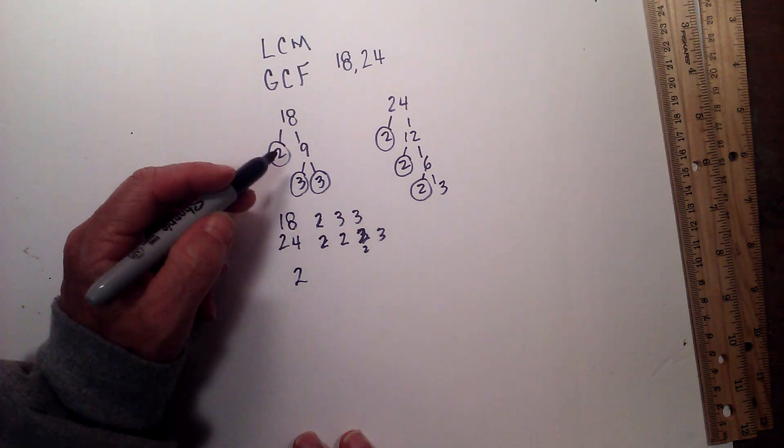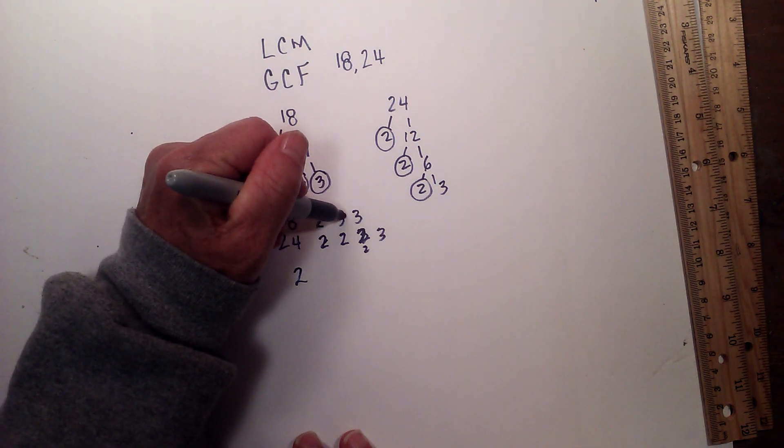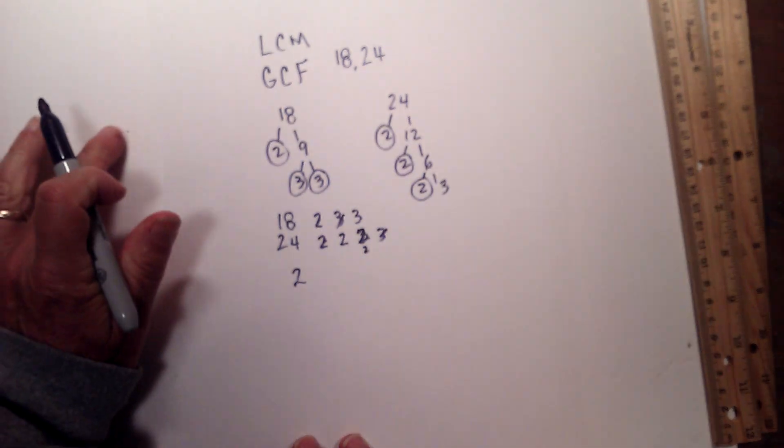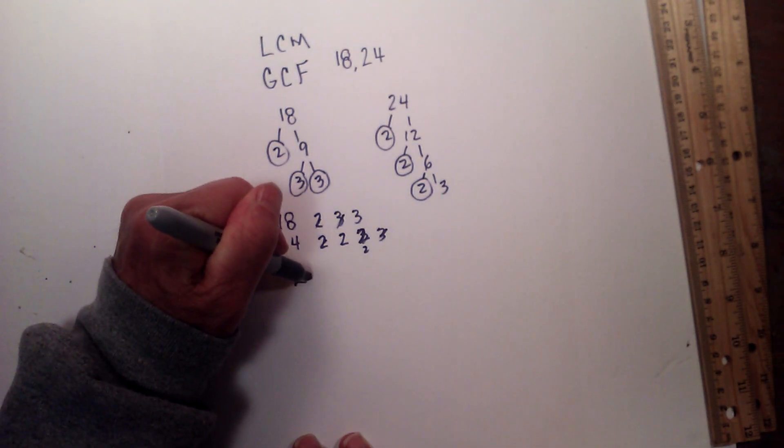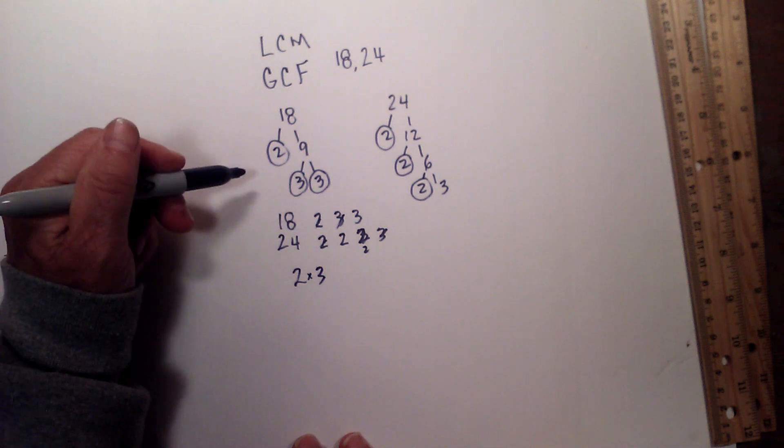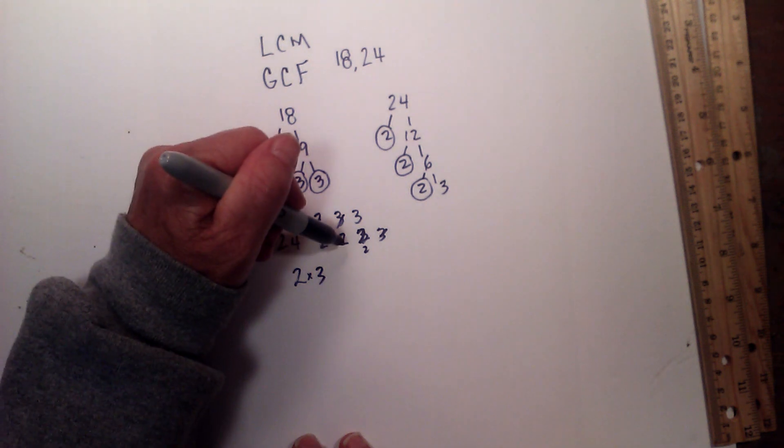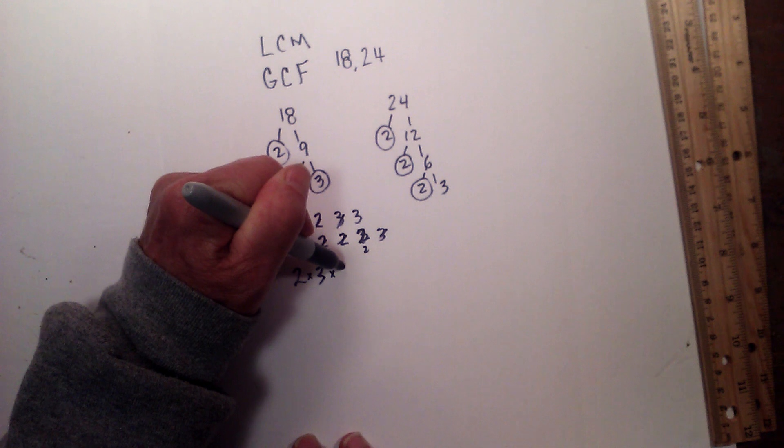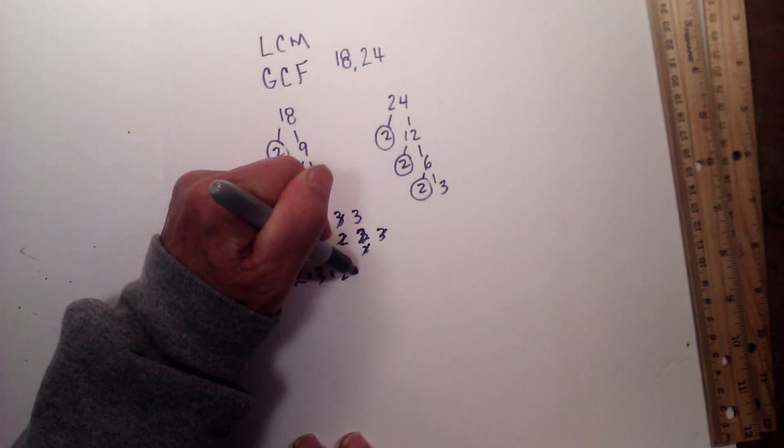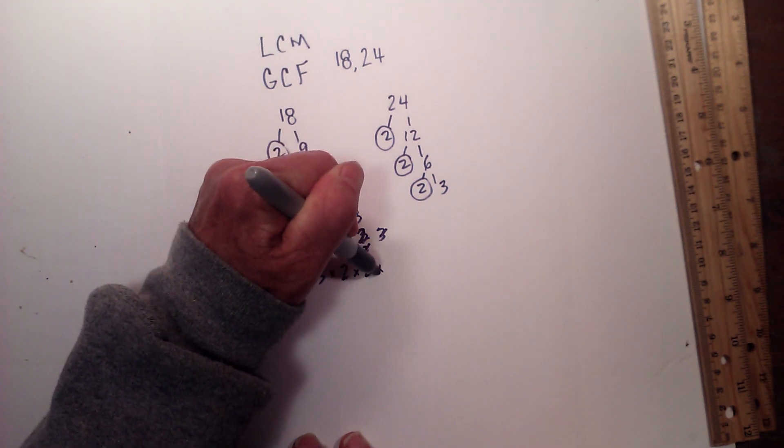Then we have a 3, and that is found in both numbers, so multiply by 3. And then we have a 2, and then we have another 2, and then we have another 3.